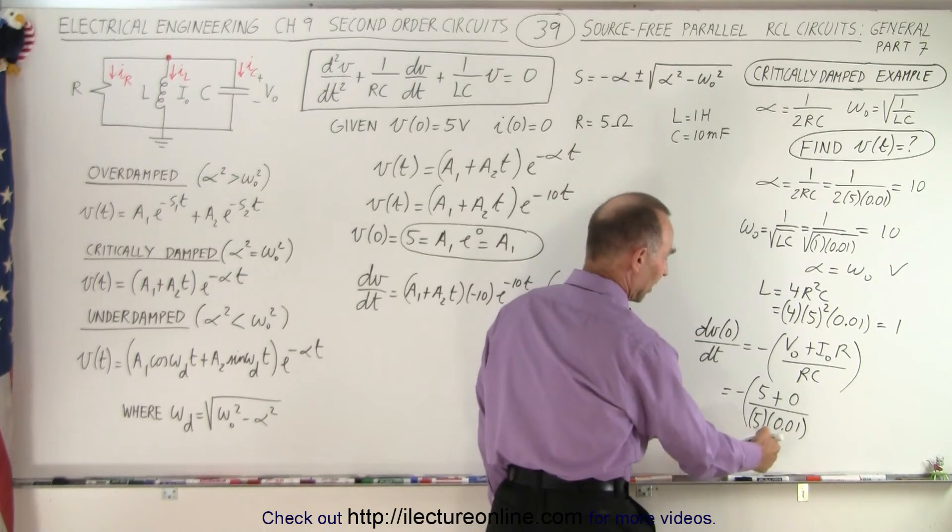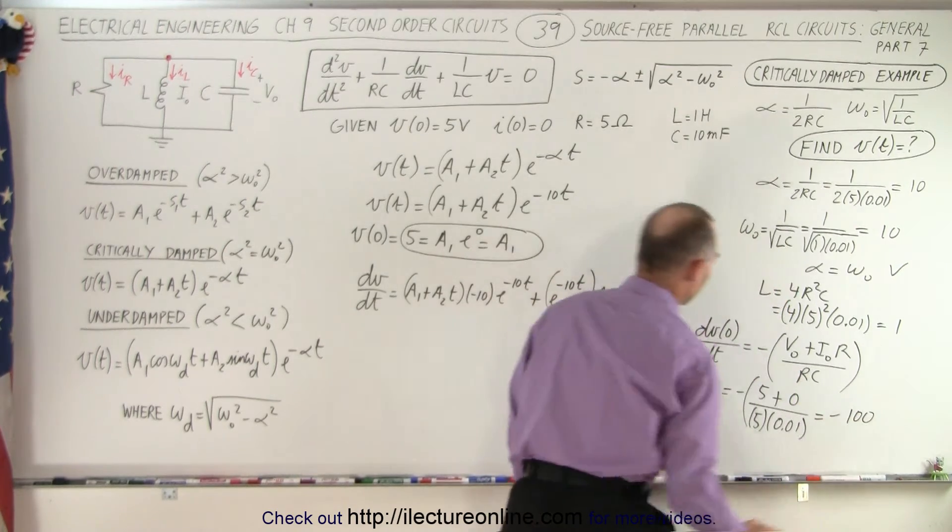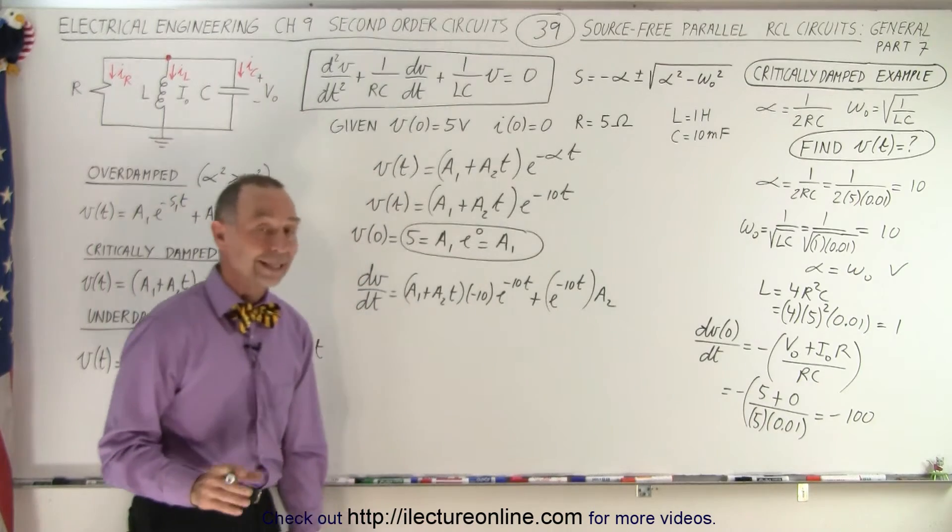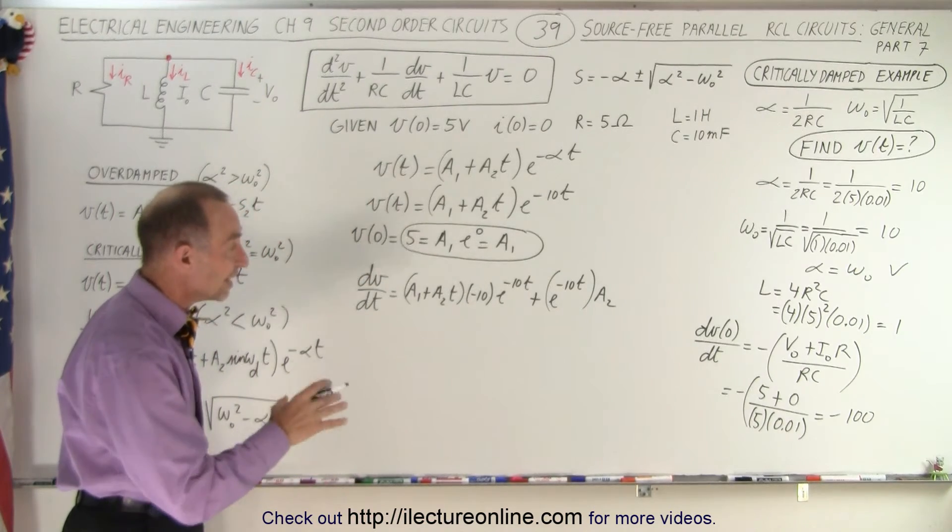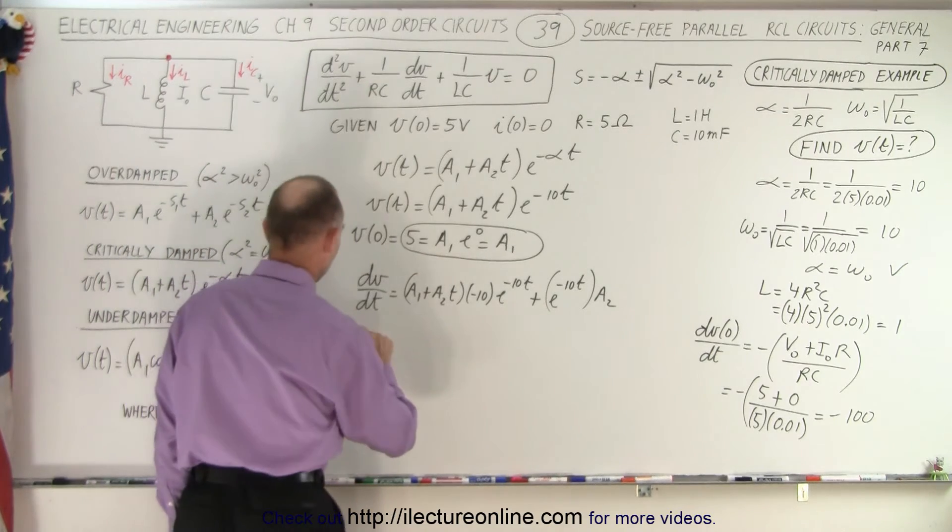The 5s cancel out, this 0.01 goes to the numerator becomes minus 100. So we now know that the initial condition tells us that dV dt when time equals 0 is equal to negative 100. Well that goes in here.